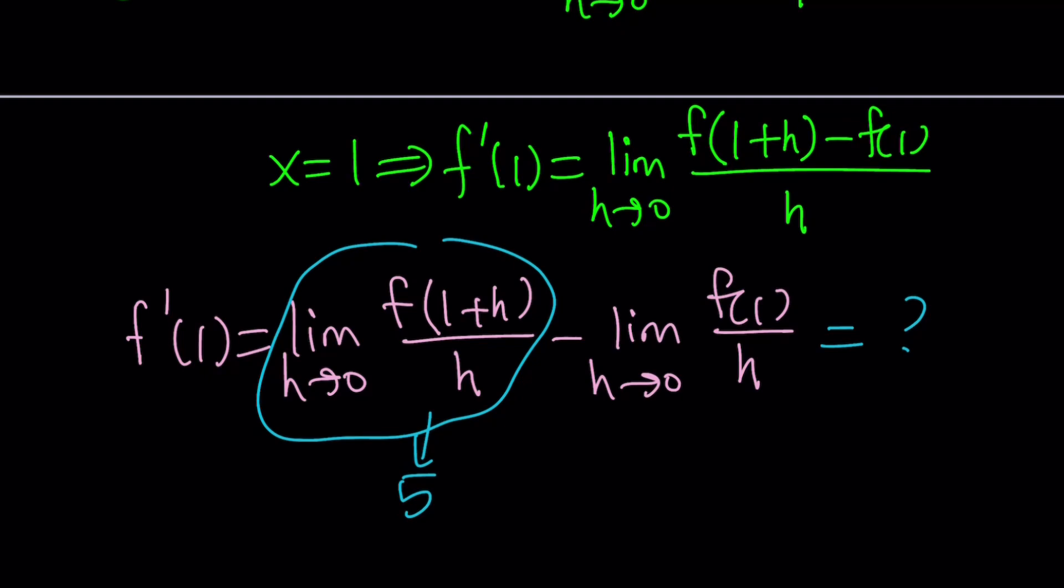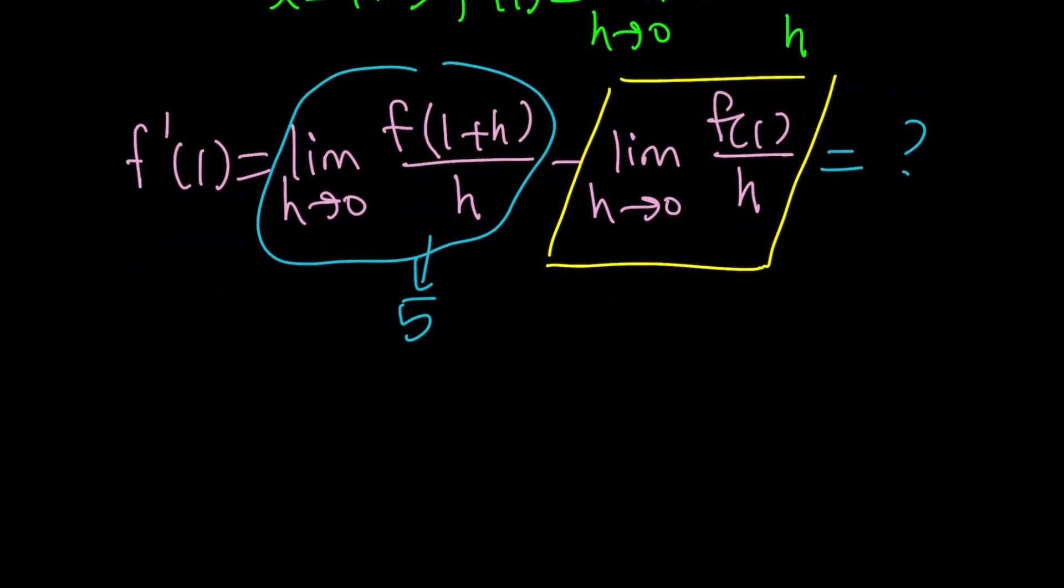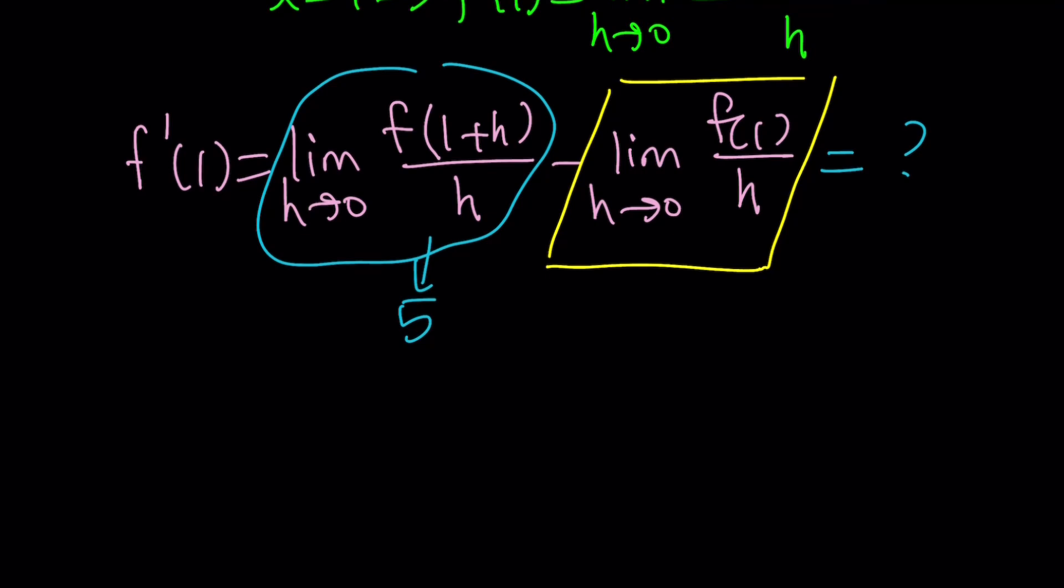But in order for the limit to exist, if you look at this limit here, if h is replaced with 0, we get f of 1 over 0. So that limit doesn't exist unless f of 1 is 0. We can get something like 0 over 0, and then it will be resolved and turn into a limit. So in order for this limit to exist, f of 1 needs to be 0.